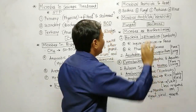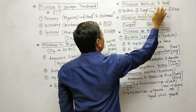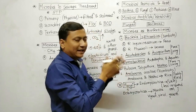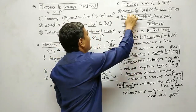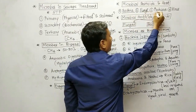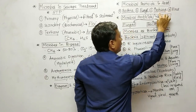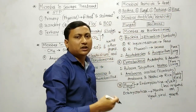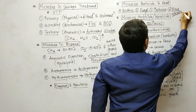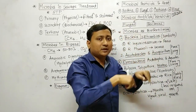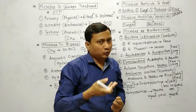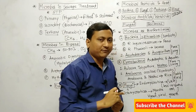The next topic is microbial pesticides and their host range — that chart is very important. Microbial pesticides include bacteria, fungi, protozoa, and viruses. The bacteria used is Bacillus thuringiensis. The fungus used is Beauveria bassiana. The protozoan used is Nosema locustae. The virus used is NPV — Nucleopolyhedrovirus — which has 125 types. You must learn the host ranges from the chart carefully.